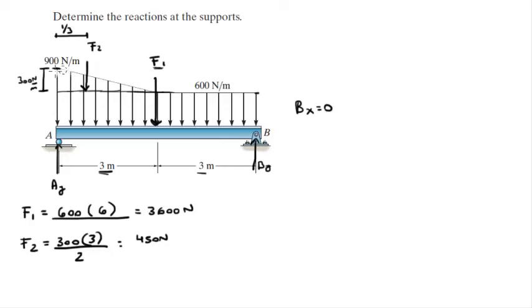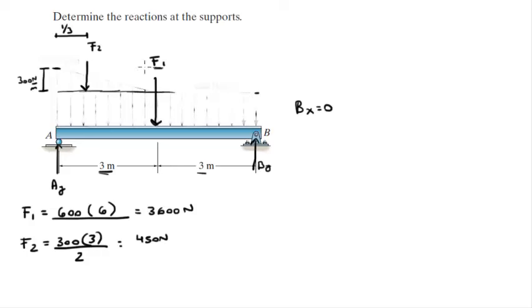So we're replacing this distributed load with these two equivalent forces acting on this assembly. I just erased it so you can see it easier. But in the test, you have to picture it in your head or draw it really well. This F2 is acting obviously over here, not up there in the air. So we have F1 and F2 already, and we replace them with these two equivalent forces. So now the problem becomes very easy, as you can see.